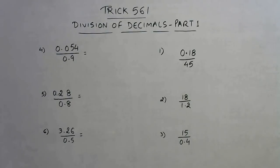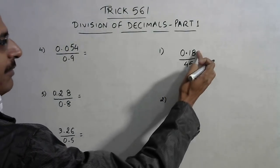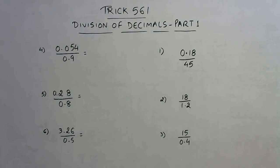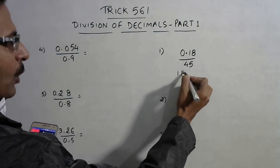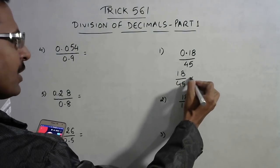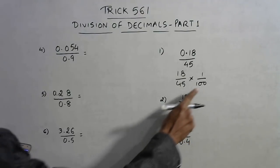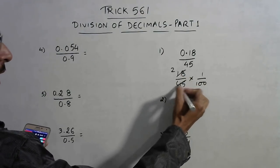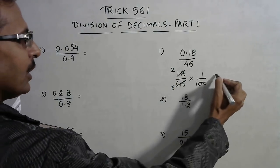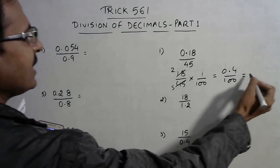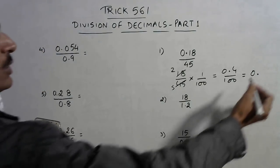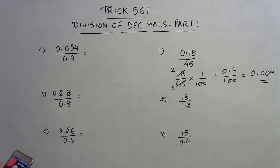Whenever you have a decimal in the numerator but no decimal in the denominator, in mental maths you will be given numbers reducible to lowest form. For example, 0.18 is actually 18/100, so write it as 18/45 times 1/100. Simplify: 9 times 2, 9 times 5, giving 2/5. Since 2/5 is 0.4, dividing by 100 shifts the decimal two places left, giving 0.004 — the answer to the first question.